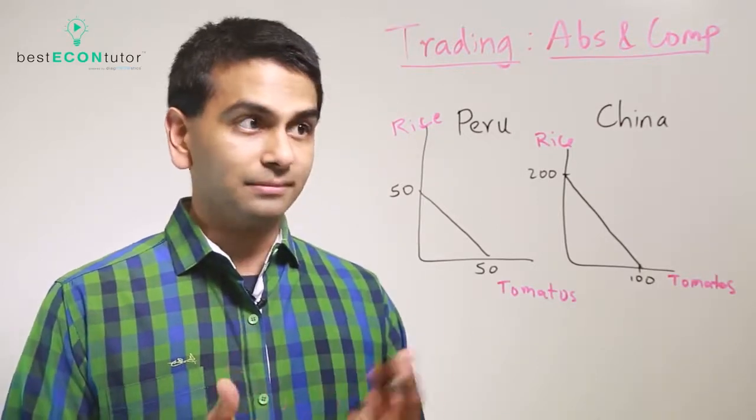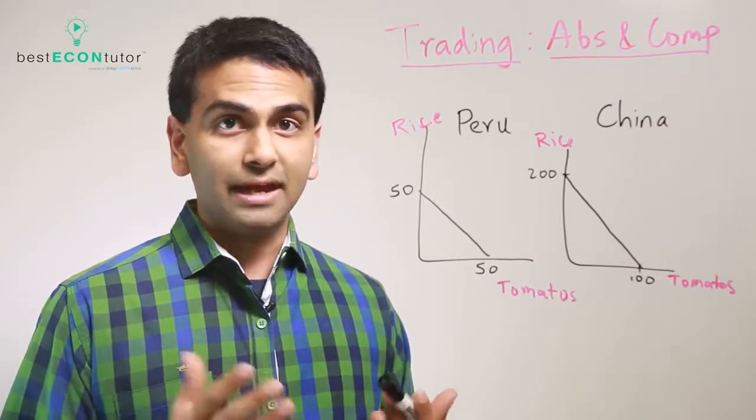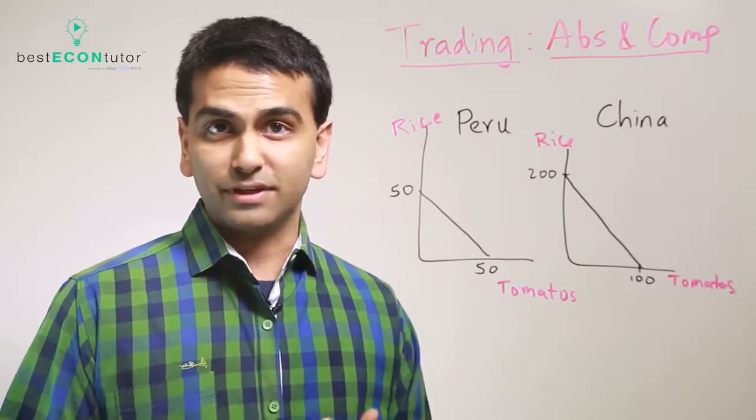Now notice it's clearly possible to have the absolute advantage for both of the goods, or you can also only have the absolute advantage for one of the goods if we change the numbers around, or for neither of the goods.